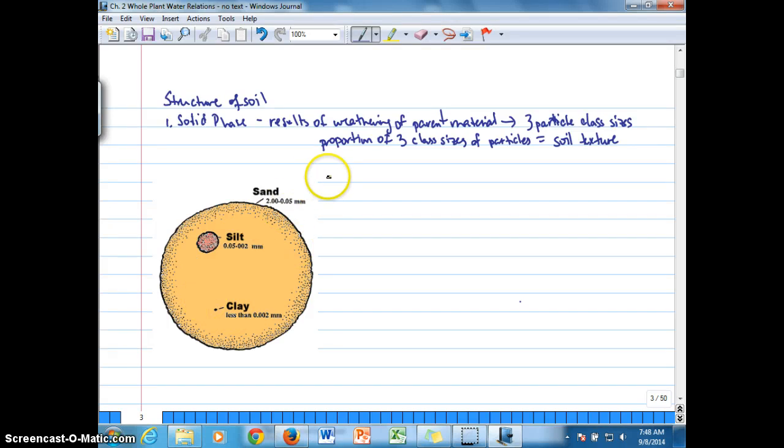The three particle class sizes start with sand. Sand has a particle class size anywhere from 0.05 to 2 millimeters. Then we have silt, which varies in diameter from 0.05 to 0.002 millimeters in diameter. And clay is, by relative comparison, the smallest, less than 0.002 millimeters in diameter. So clay particles are magnitudes less than sand particles, and that's going to translate into different characteristics depending on their proportion in the soil.